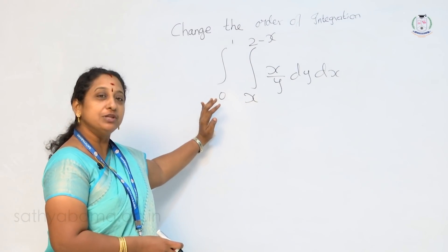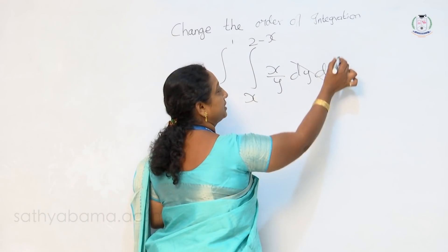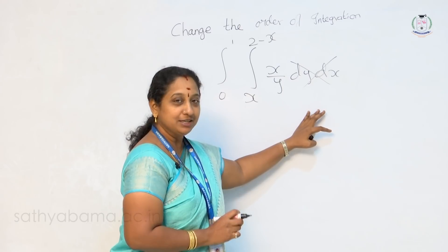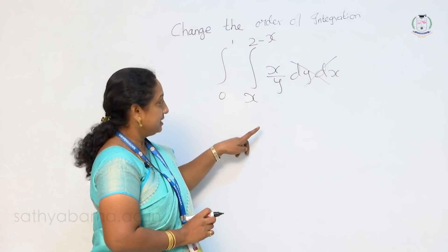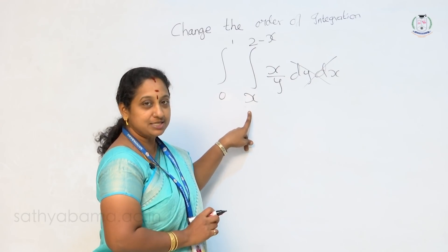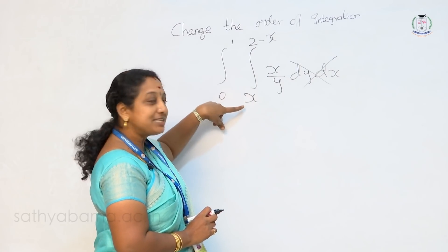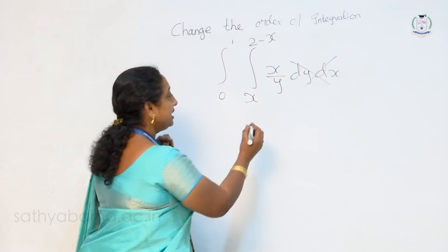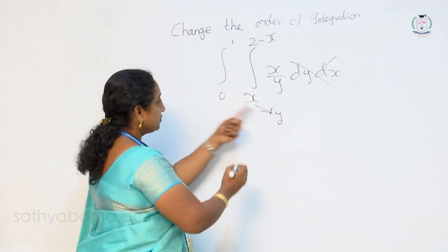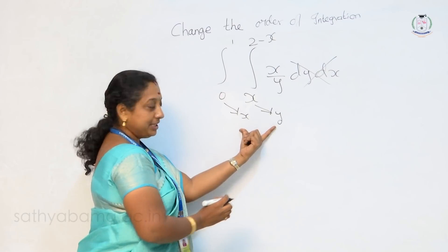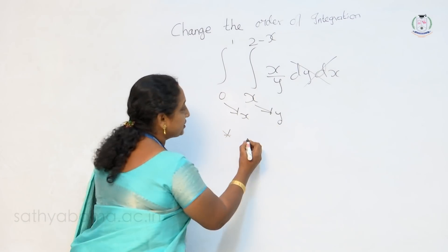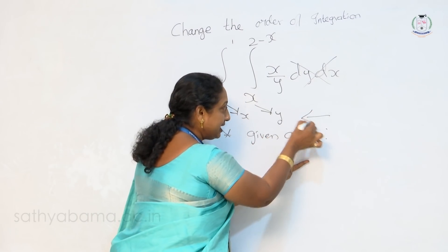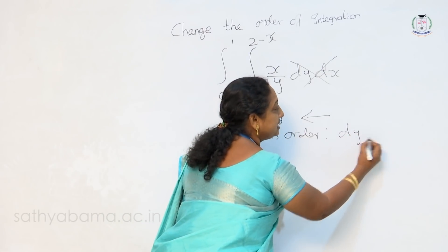First thing you have to look into the limits. Whatever be the given order, just forget about that even though it is in the right sense. We have to identify the order. To identify the order, we have to go through the limits. Check whether all the limits are constant. Here it is not constant — the limits range between x to 2 minus x. Therefore it is a variable limit in terms of x, so this is a limit for y. The other one is a limit for x. Therefore, the given order is dy dx.